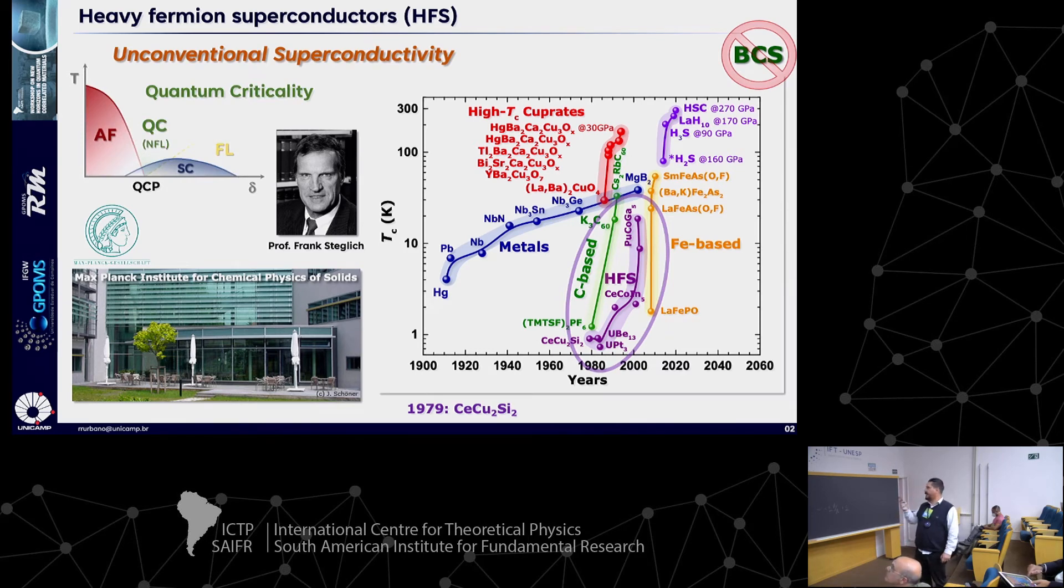I'll be focused mainly on the 115 materials in this graph here. They are non-BCS, unconventional superconductors. The very first one was discovered long ago in the late 70s at the Max Planck Institute by Professor Frank Steglich. This class of materials relates to very intriguing physics. Usually, antiferromagnetism as a ground state and superconductivity shows up at the verge of this magnetism, and also displaying some quantum criticality in between with some non-Fermi liquid behavior.